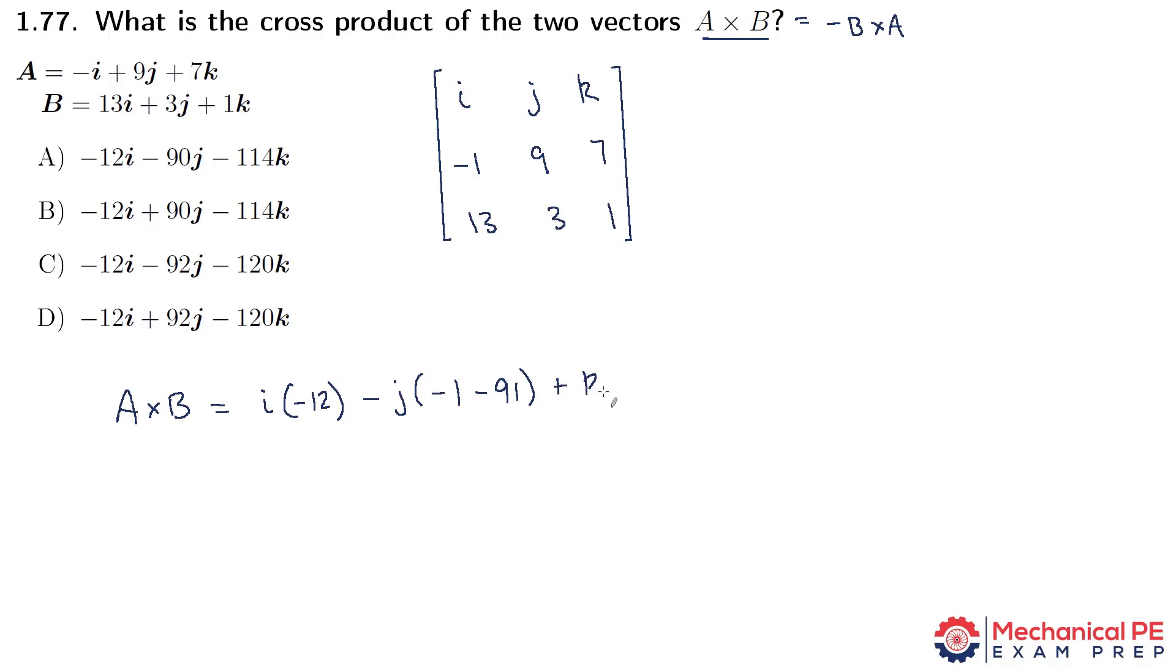All right, and the last one, plus k, we're crossing out the first row and the last column. So our 2 by 2 matrix is minus 1, 9, 13, and 3. So minus 1 times 3 is minus 3, minus 9 times 13 is 90 and 27, 117.